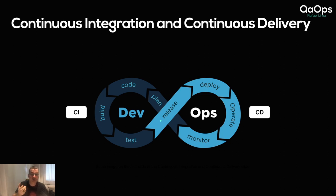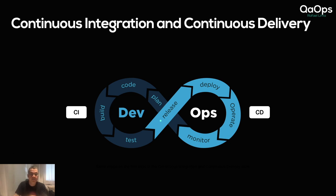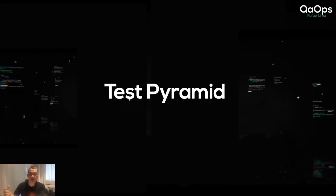When you deploy straight to production, that's continuous deployment. In a lot of these strategies you put a feature on a toggle where you can turn it on or off once it's in production, but on every push, if everything goes successfully through your pipeline, that code goes straight to production without any human interaction.